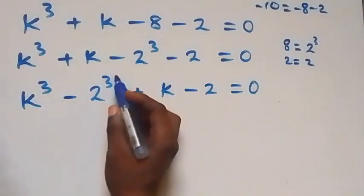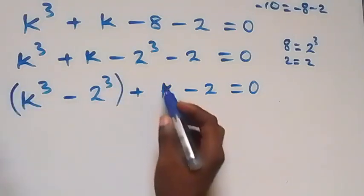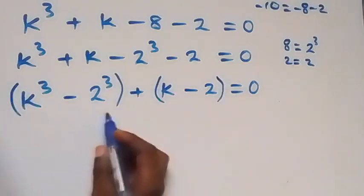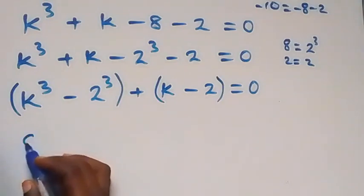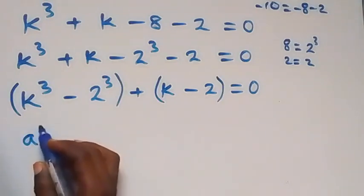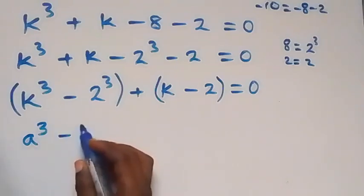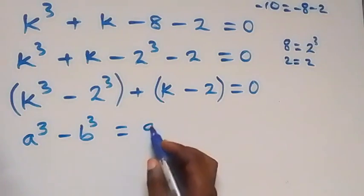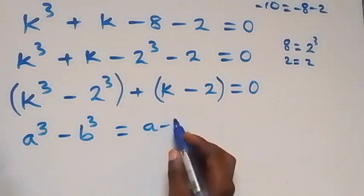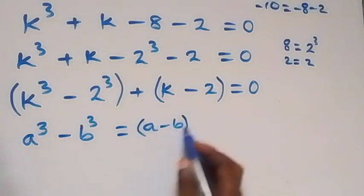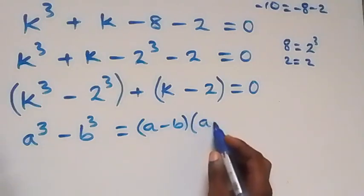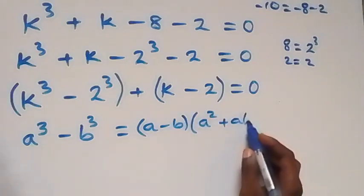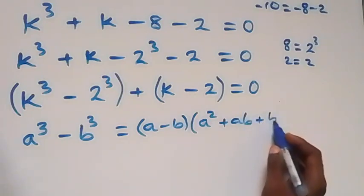Let's group this together and also this together. Applying the difference of cubes: when we have a raised to power 3 minus b raised to power 3, this is equal to a minus b multiplied by a squared plus ab plus b squared.